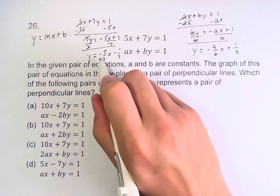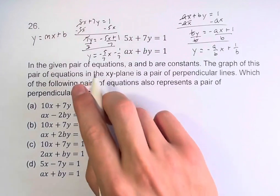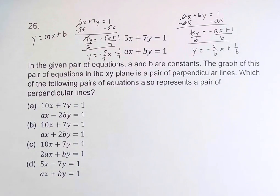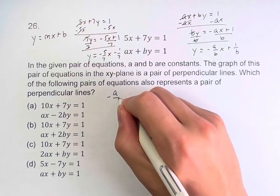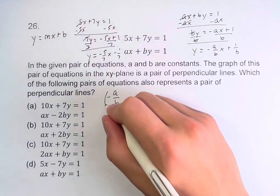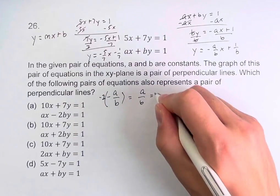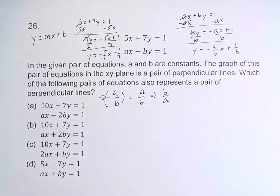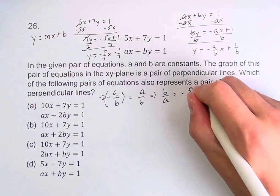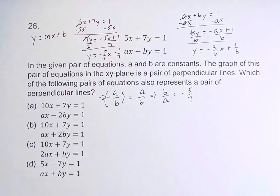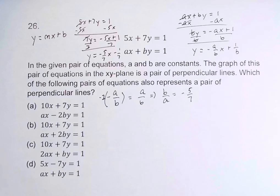This equation and the previous equation are perpendicular to each other when graphed, which means their slopes are opposite reciprocals of each other. The opposite reciprocal of negative a over b: multiply by negative 1 to get positive a over b, then flip it to get b over a. We therefore know that b over a equals negative 5 over 7.